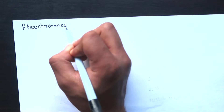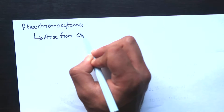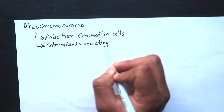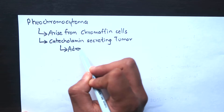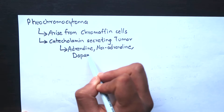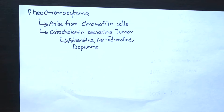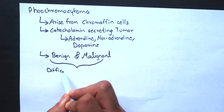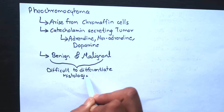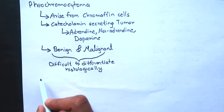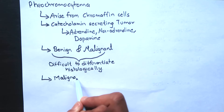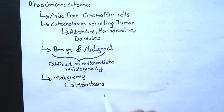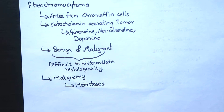Pheochromocytoma is a tumor arising from chromaffin cells, and chromaffin cells secrete catecholamines. So this is a catecholamine-secreting tumor, and catecholamines include adrenaline, noradrenaline, and dopamine. It could be benign or malignant; however, it is very difficult to differentiate these two on the basis of histology. The definitive diagnosis of malignancy in pheochromocytoma is based exclusively on the presence of metastasis, which may involve regional lymph nodes, liver, lung, and bone.